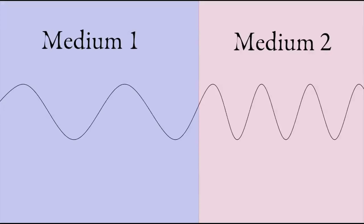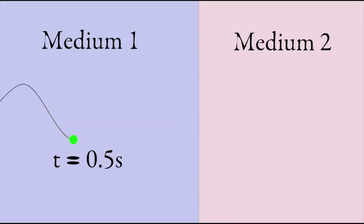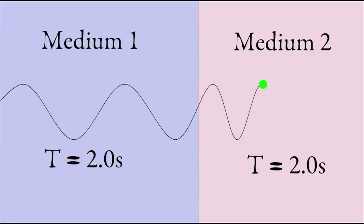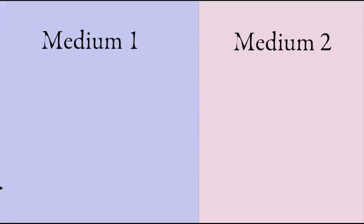So if we look at the time to complete one cycle from crest back to crest, it takes two seconds. That's the period. When it enters the new medium, the vertical motion hasn't changed. So the time to go from crest to crest is still two seconds. If the periods are the same, then the wave must have the same frequency.